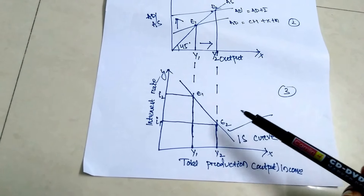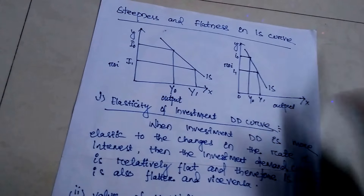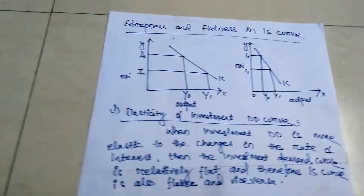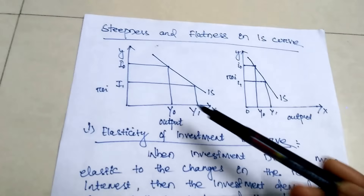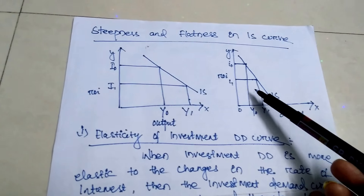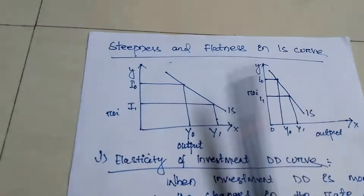Next we have to read about the steepness and flatness of the IS curve. One diagram shows a steeper IS curve and another shows a flatter one. The steepness and flatness of the IS curve depends on two reasons.